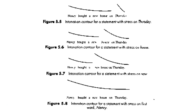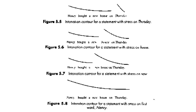Here we have an example of intonation using the sentence 'Nancy bought a new house on Thursday.' The pitch contour changes depending on where the stress falls. If you focus stress on Thursday — 'Nancy bought a new house on Thursday' — you get one pitch contour. Stressing house, new, or Nancy each produces a different contour. The focused word signals contrastive or new information — for instance, stressing Thursday might mean you're correcting someone who thought it happened on Tuesday, or introducing the specific day as new information.